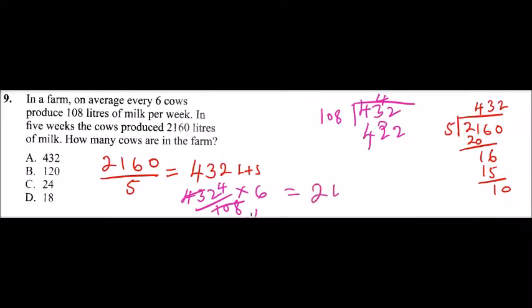You get 24. So these are the number of cows that were in the farm. Check your answers. Always work out a question without looking at the answers so that you don't get confused.